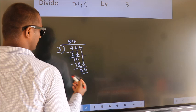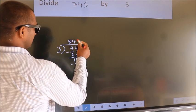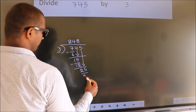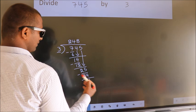So 25. A number close to 25 in 3 table is 3 8's 24. Now we subtract. We get 1.